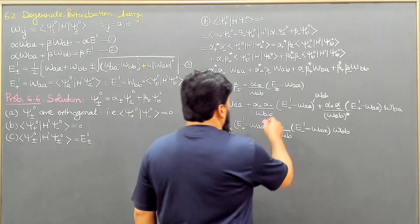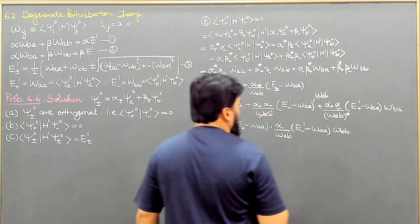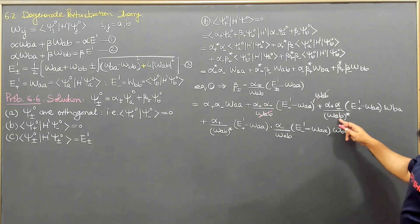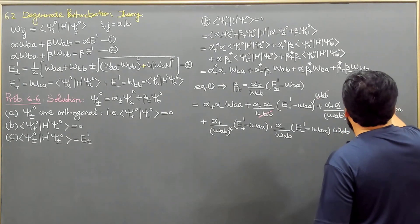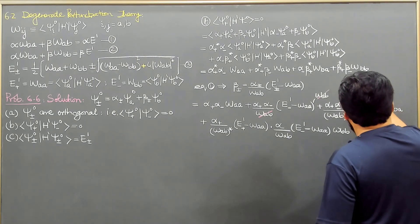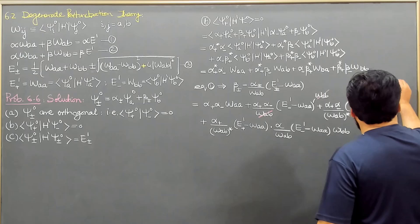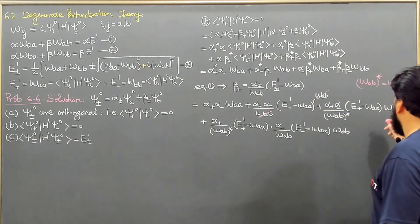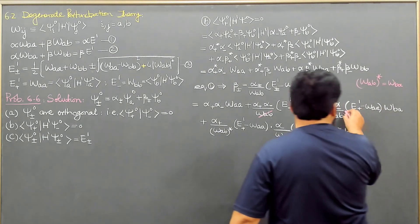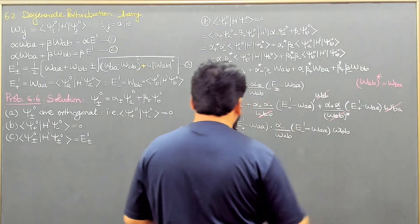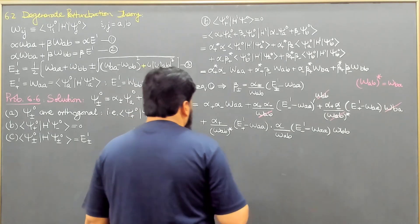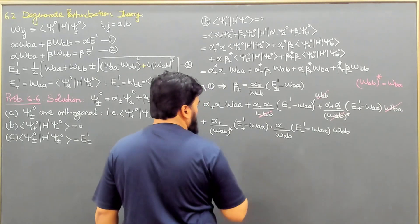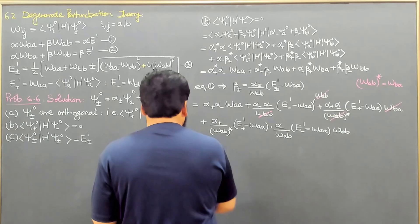W_AB terms are cancelling. W_AB conjugate becomes W_BA, and W_AB cancels with W_BA. The remaining terms give |W_AB|² in the final expression, which we factor out.